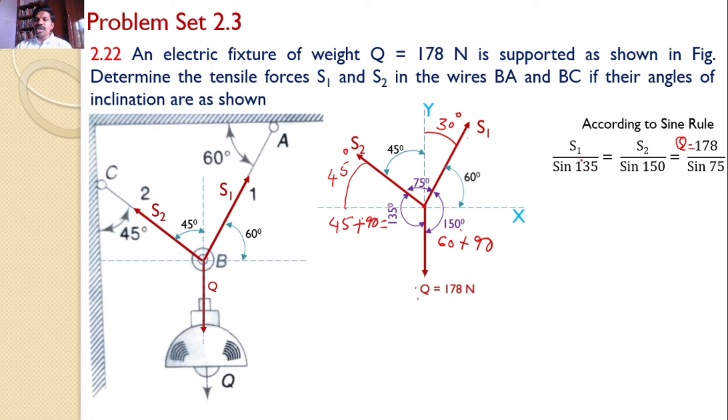That is equal to S2 divided by the angle between S1 and Q, which is 150. So S2 divided by sin 150. All these three values are same. S1 by sin 135, S2 by sin 150, equals Q, which is 178 divided by sin 75.